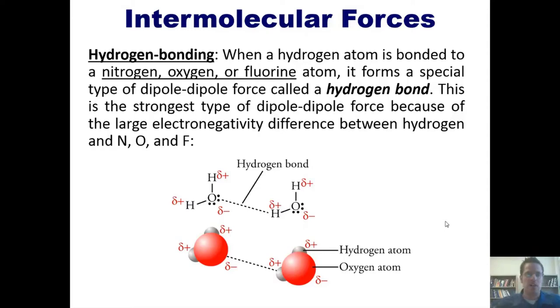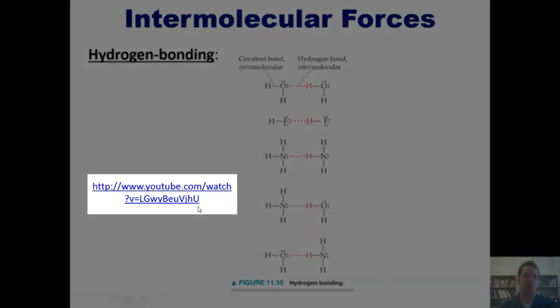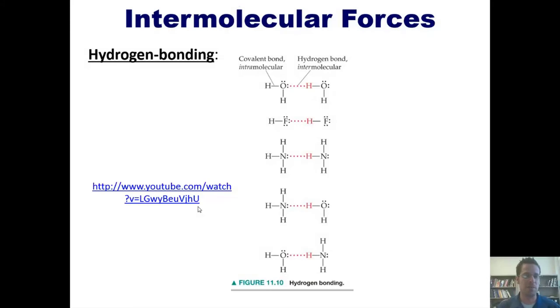This slide shows analogous pictures of hydrogen bonding involving fluorines and nitrogens. You can also have hydrogen bonding occurring between nitrogen and oxygen-containing compounds, or analogously between nitrogen and fluorine-containing compounds, or oxygen and fluorine, or oxygen and nitrogen, or any combination of the above. This video, which I highly recommend you watch and to which I'll post a link right here, helps show that in a visually stimulating way.